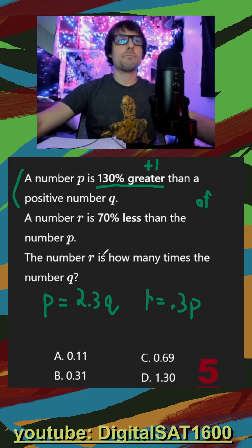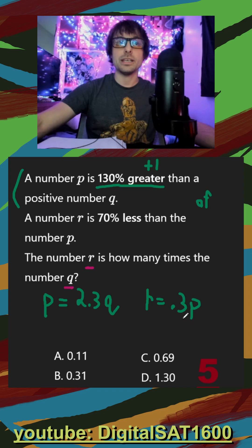And then finally, they want the number R is something Q. So since they want R and Q in my final equation, I actually want to get rid of P. So I can just substitute, we can say R is equal to 0.3, replace P with what P is equal to, 2.3 Q.